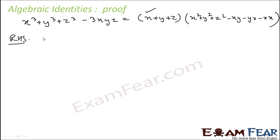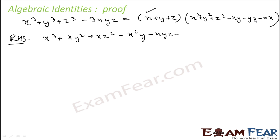Multiplying x into the bracket: x × x² = x³, x × y² = xy², x × z² = xz², minus x × xy = x²y, minus x × yz = xyz, minus x × zx = x²z. I'll follow the convention of xyz ordering.